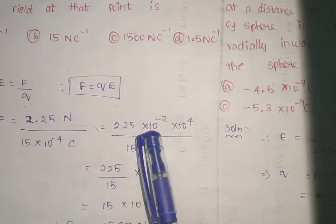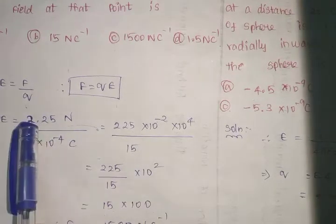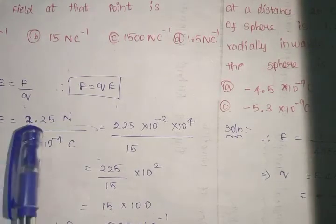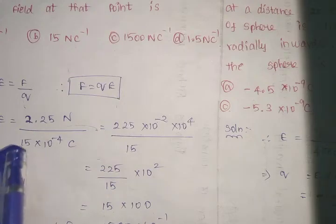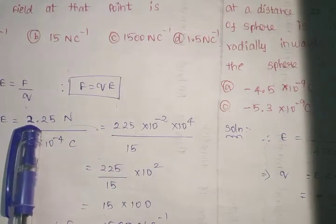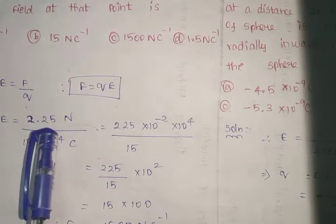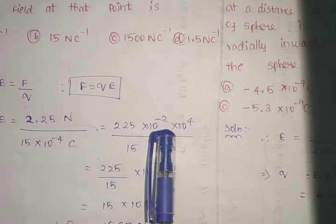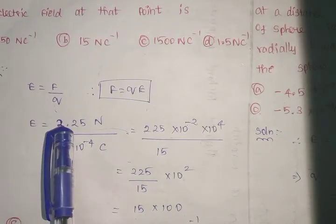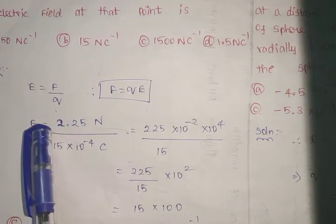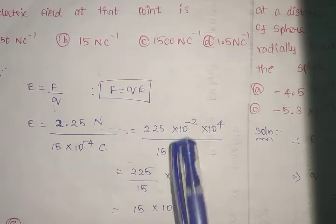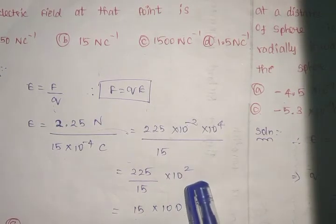Now I have introduced 10 to the power minus 2 by moving two points from the right side of 2.25. When we move from the right side, the 10 to the power negative values occur. If we move from the point towards the left side, we get positive values, 10 to the power positive values.